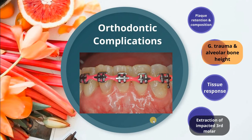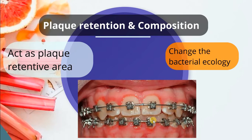Let us talk about periodontal complications associated with orthodontic therapy. Orthodontic therapy may affect the periodontium by favoring plaque retention, by directly injuring the gingiva as a result of overextended bands, and by creating excessive or unfavorable forces that affect the supporting structures of the tooth. Orthodontic appliances affect plaque retention and composition in two ways: plaque retention and a change in bacterial ecology — not changing the number of bacteria, but the type, from gram-positive to more gram-negative types.